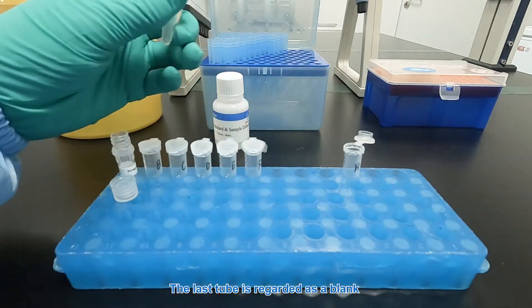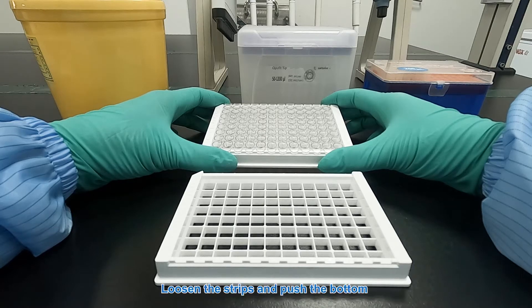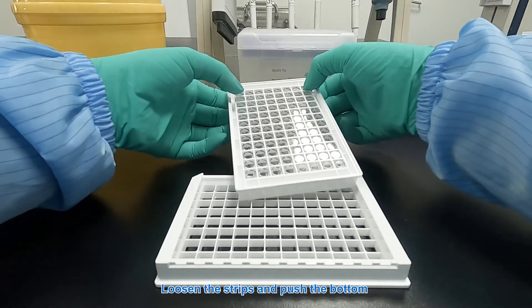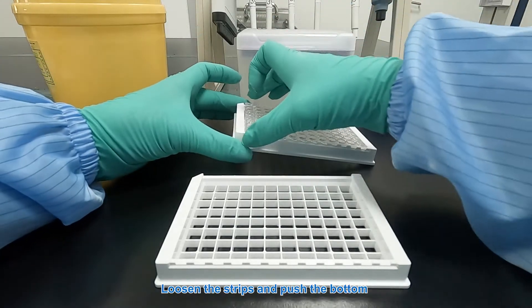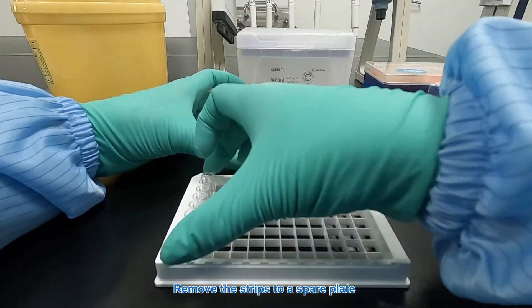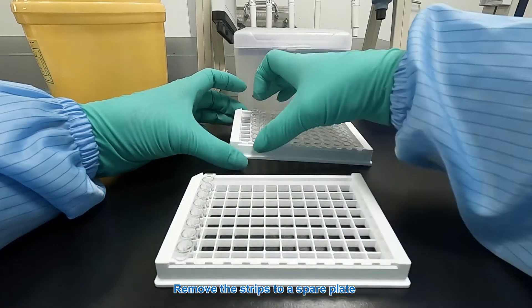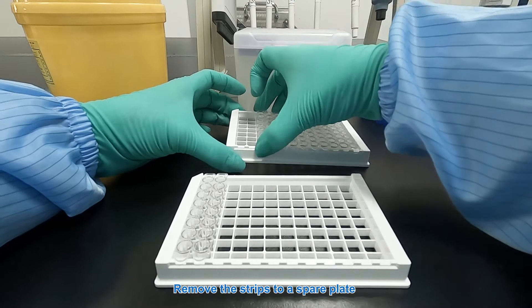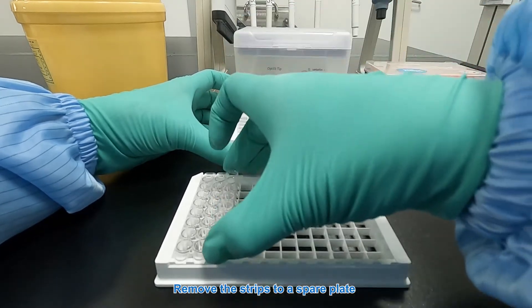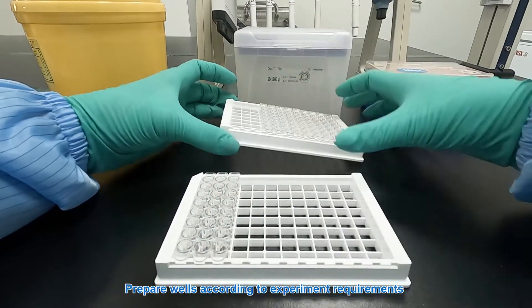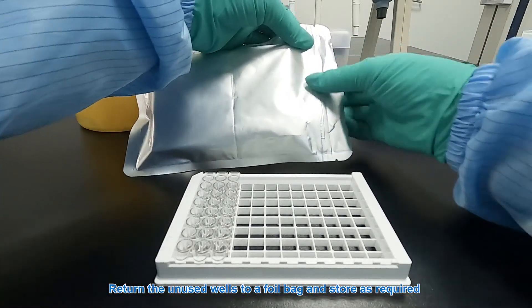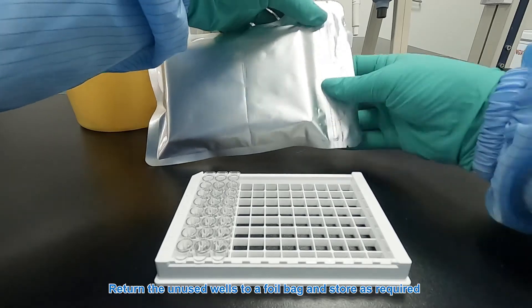The last two is regarded as a blank. Loosen the strips and push to the bottom. Remove the strips to a spare plate. Prepare wells according to the experiment requirements. Return the unused wells to a foil bag and store as required.